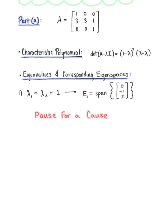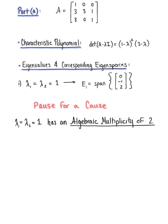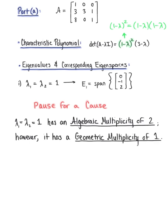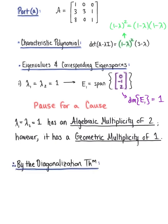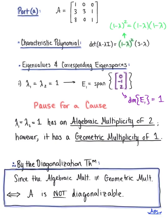While we know that matrix A has another eigenvalue, we have enough information to make our final conclusions. For lambda equals 1, this eigenvalue has an algebraic multiplicity of 2, because the binomial (1 − λ) appears 2 times in the characteristic polynomial. However, this same eigenvalue has a geometric multiplicity of 1, because the dimension of eigenspace E sub 1 is 1. Therefore, by the diagonalization theorem, since the algebraic multiplicity does not equal the geometric multiplicity, matrix A is not diagonalizable — which confirms our previous conclusion.